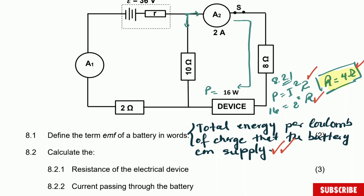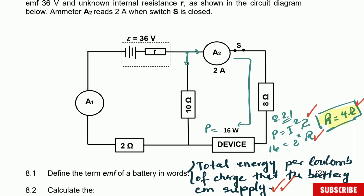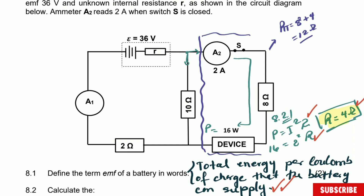Calculate the current passing through the battery. We need to calculate the total current. We are going to use the external circuit because we don't know the internal resistance. First, we calculate the potential difference from one side of the circuit. The total resistance for that side — the 8 ohm resistor plus the 4 ohm device — is 8 + 4 = 12 ohm.